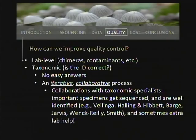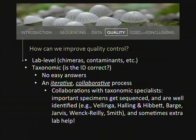The third question is how to improve quality control. There are a couple of elements. The lab-level quality control — chimeras, contaminants, etc. — I won't address, as everyone working in the lab knows those issues. The more important topic is taxonomic quality control: is the identification correct? I don't have easy answers, but I think the process has to be iterative and collaborative.